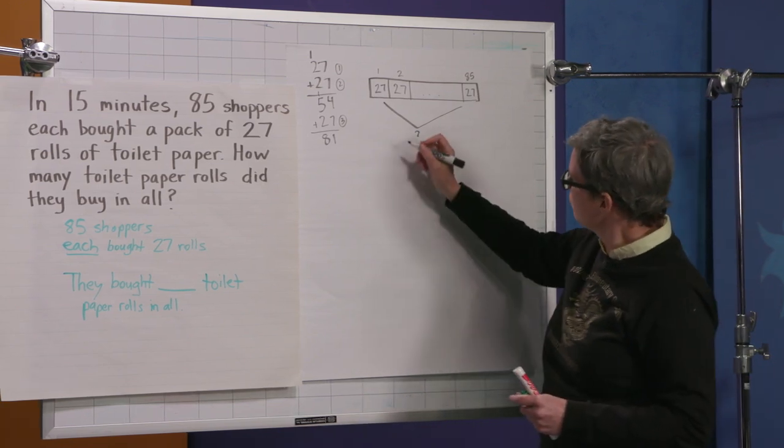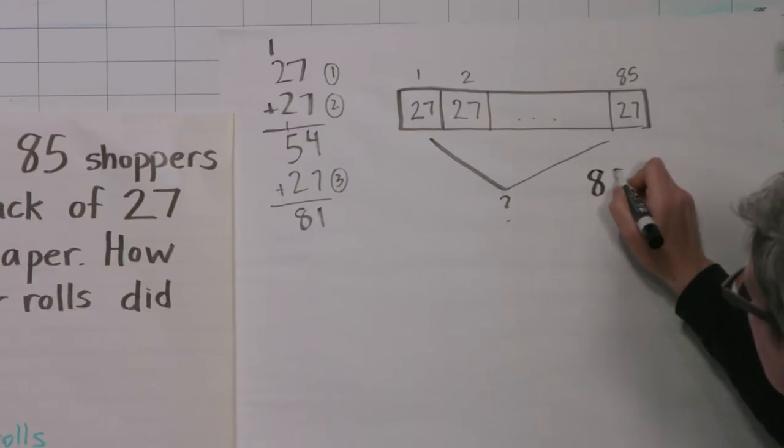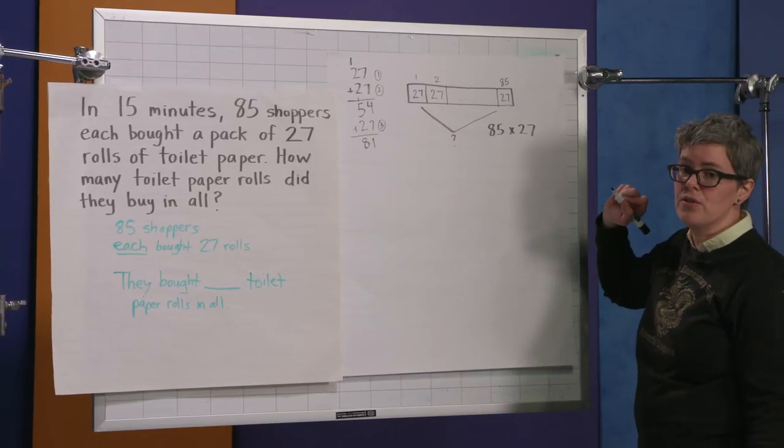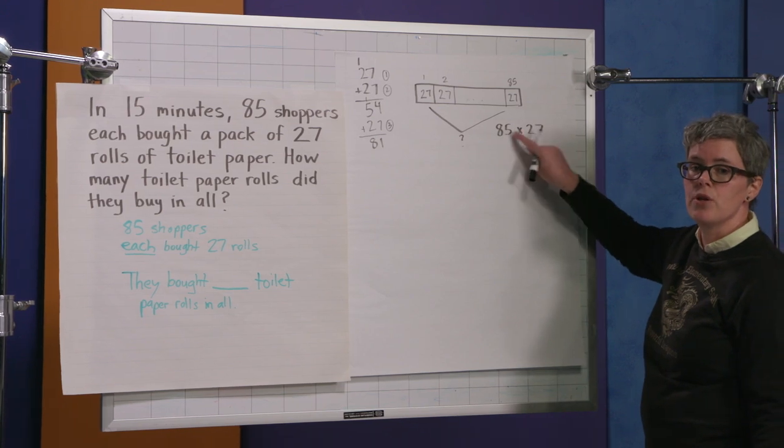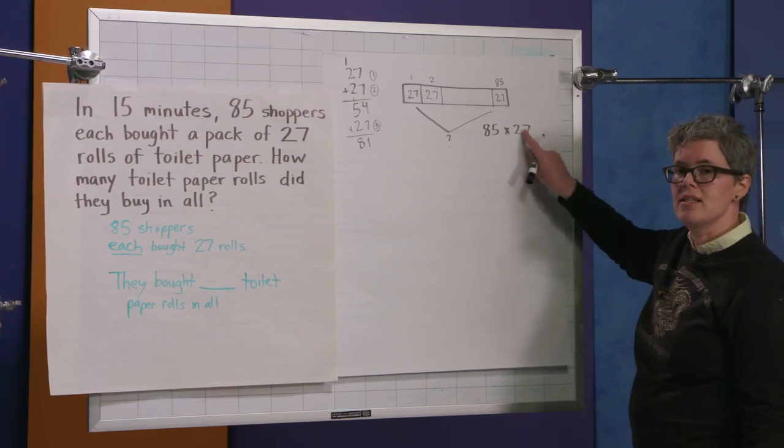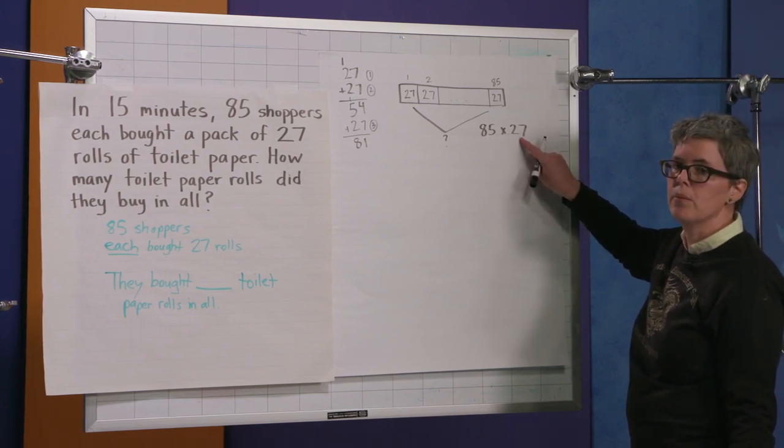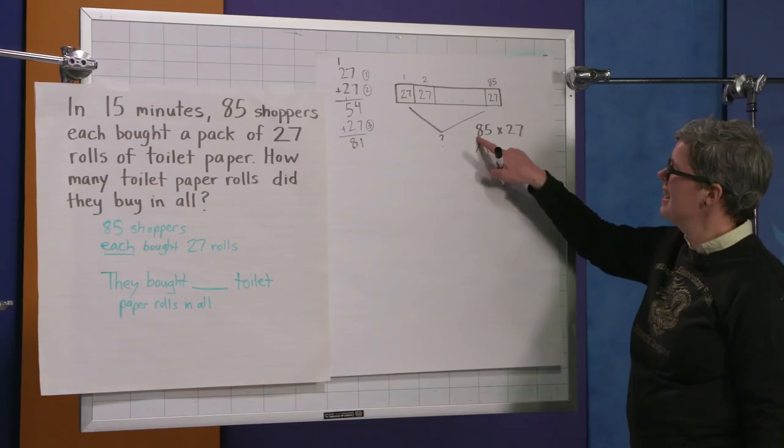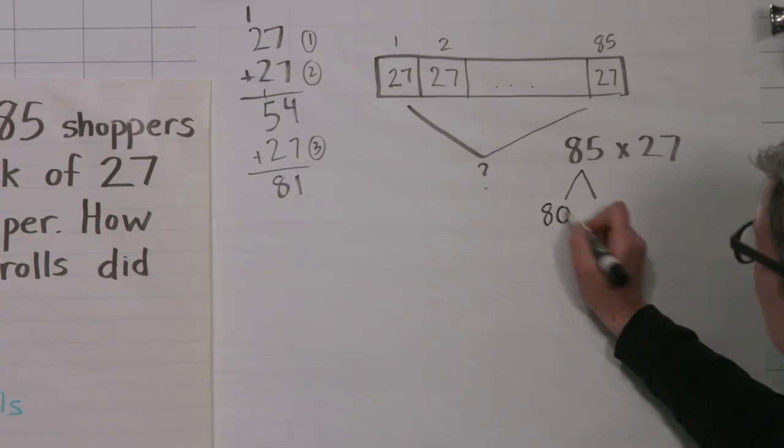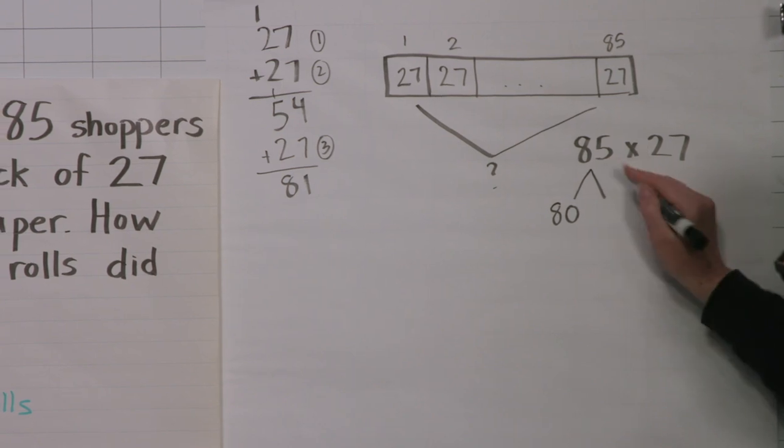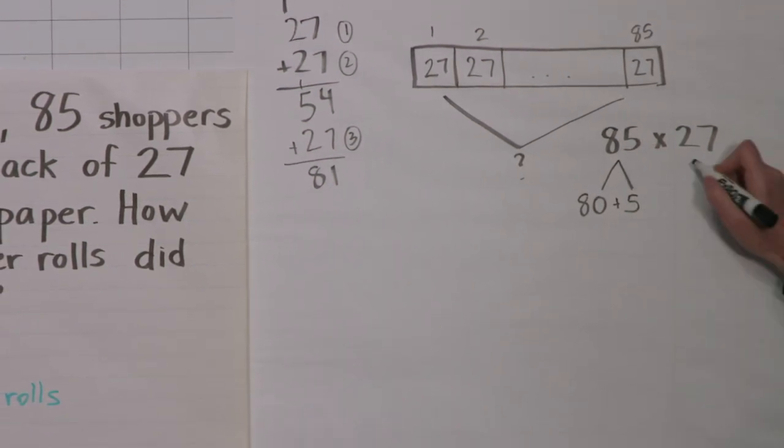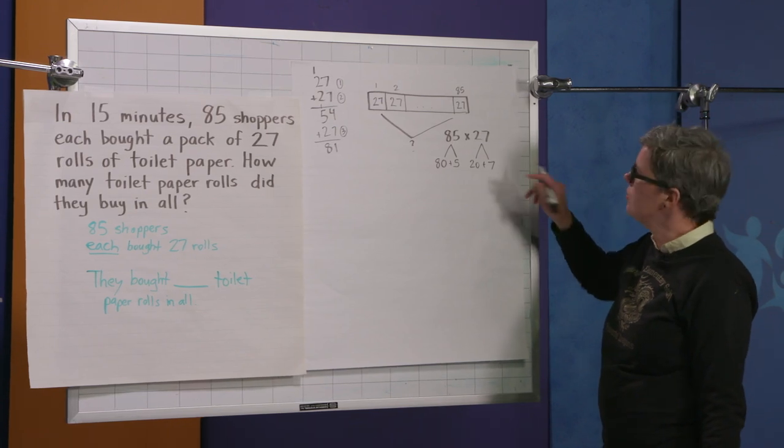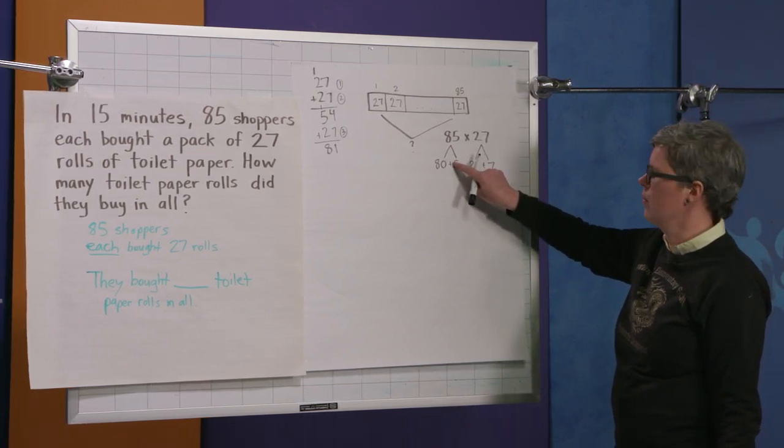Okay. So we're going to start with expanded form. So we know that our problem is 85 times 27, and I didn't know this until I was a math teacher. It's kind of embarrassing to admit, but it's true. I didn't know that it mattered what order you write numbers when you're multiplying. The first number is the number of copies. The second number is how many is in each group. So number of groups, how many are in each group? Okay. So 85 times 27. I'm going to take 85 apart into expanded form. This is not an 8. This is an 80. Okay. You can build that language with your students. This is a 5. 80 plus 5 is 85. Okay. 20 plus 7.